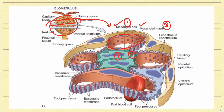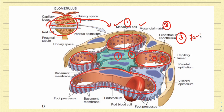The mesangium is surrounded by multiple capillary loops. These capillary loops are lined by the fenestrated endothelium, which shows fenestrations of approximately 70 to 100 nanometers — that is the gap of this endothelial tissue.